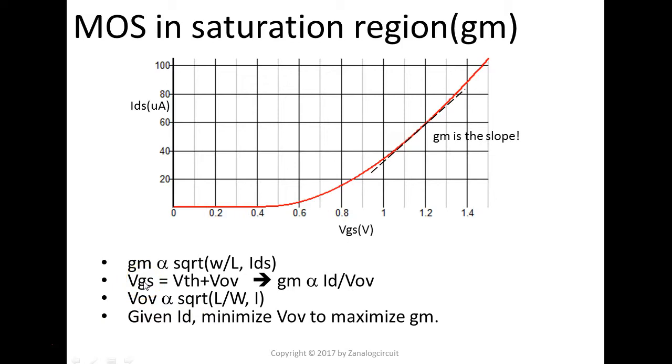And, the second one is the VGS equal to VTH of the MOS plus an overdrive voltage. Usually, it depends on the circuit. Usually, we pick 200 millivolts as a good starting point for the overdrive voltage. Sometimes, it goes as low as 100 millivolts or so. And, also, you can go back to the Razavi book. GM is proportional to ID over V overdrive. V overdrive is proportional to square root of L over W ratio or square root of IDS.